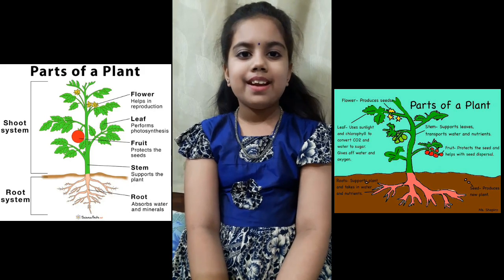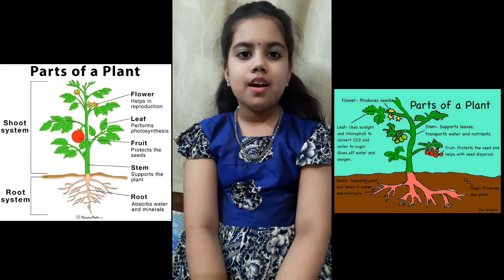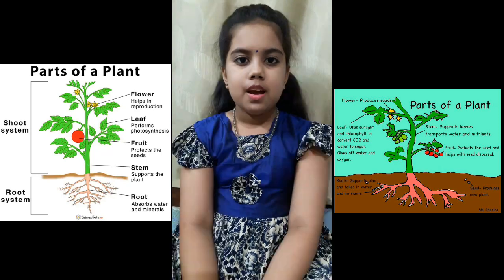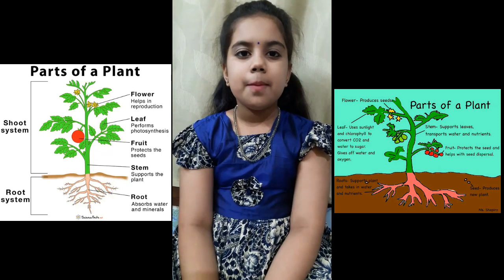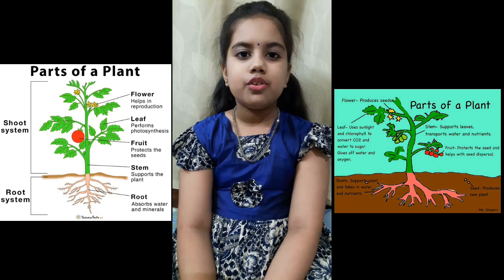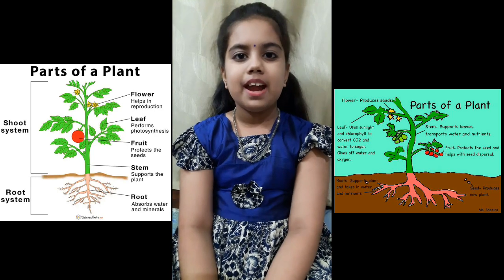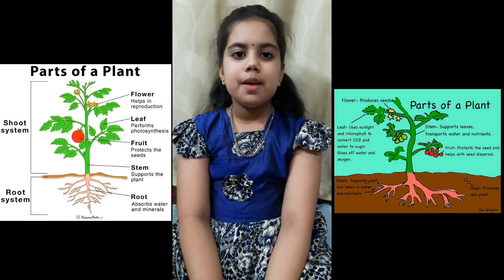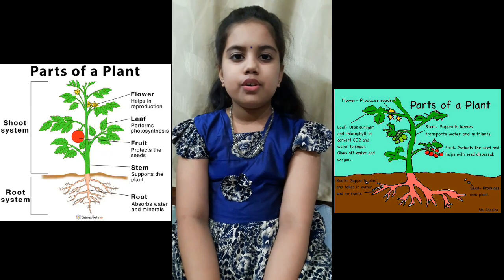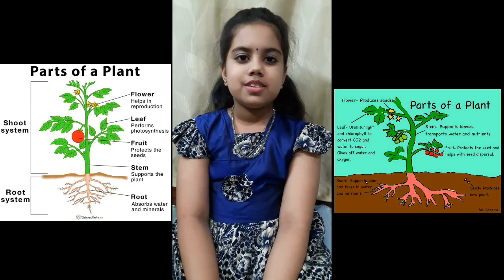Parts of the plant above the soil that we can see is called the shoot of a plant. Parts of a plant below the soil that we cannot see is called the root of a plant. There are mainly 5 parts: flower, leaves, fruit, stem and roots.